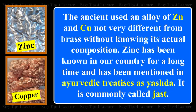The ancients used an alloy of zinc and copper, not very different from brass, without knowing its actual composition. Zinc has been known in our country for a long time and has been mentioned in Ayurvedic treatises as Yashda. It is commonly called Just.